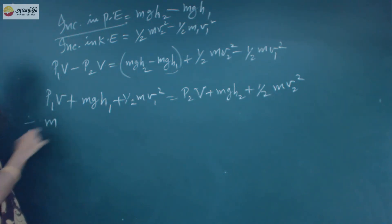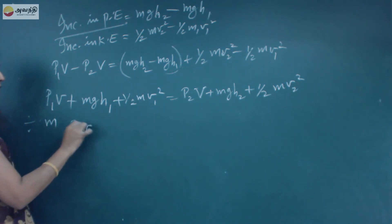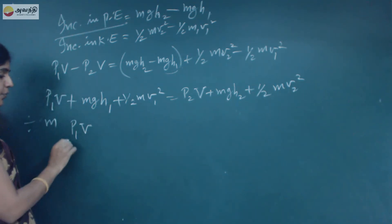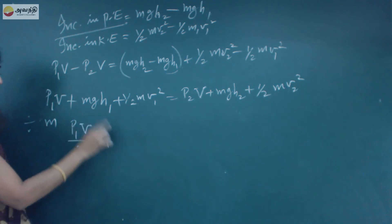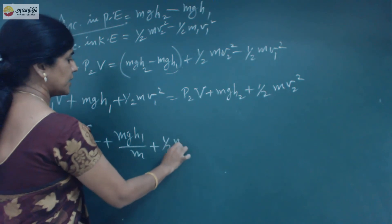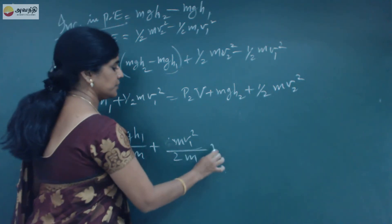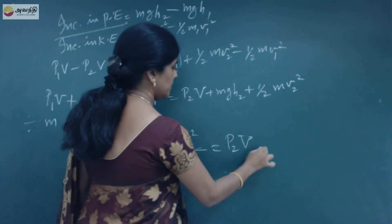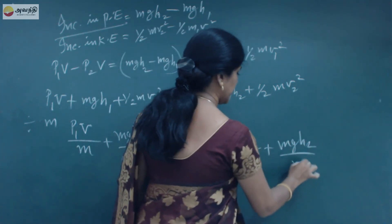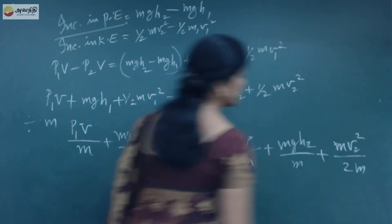Now divide the whole equation by mass M to calculate per unit mass. P1V by M — note that V here is volume (capital V), not velocity (small v). Dividing gives P1V/M plus gH1 plus half V1 squared equals P2V/M plus gH2 plus half V2 squared.